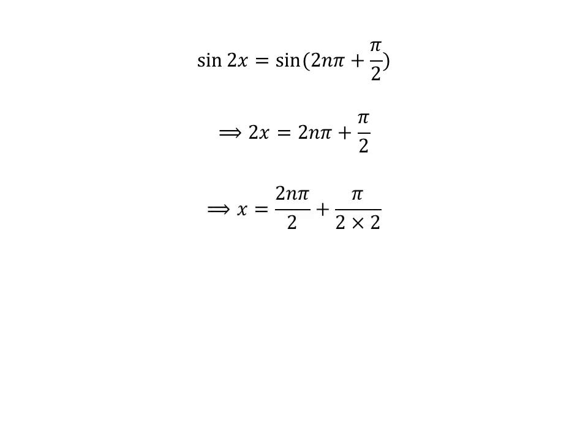Taking 2 to the right hand side gives us x is equal to 2nπ/2 plus π/(2×2). Simplification gives us x is equal to nπ plus π/4.